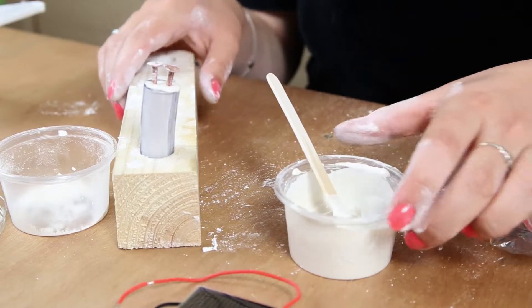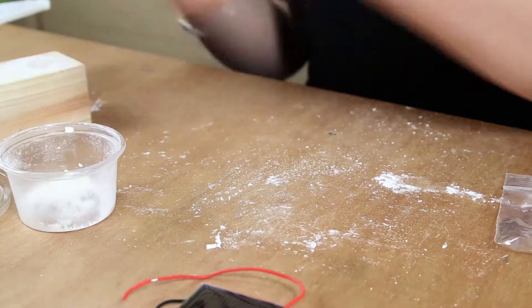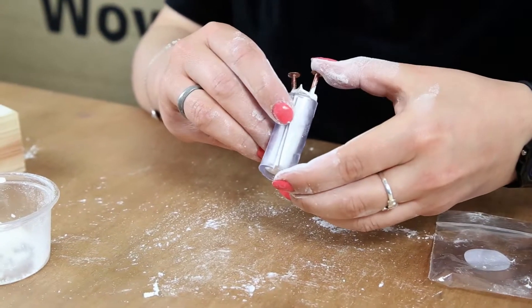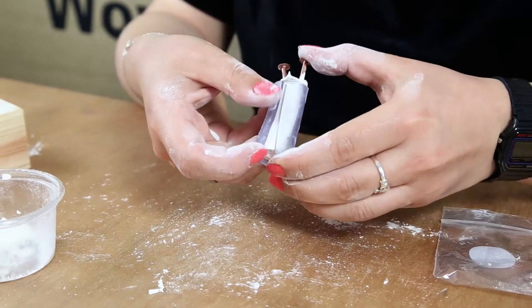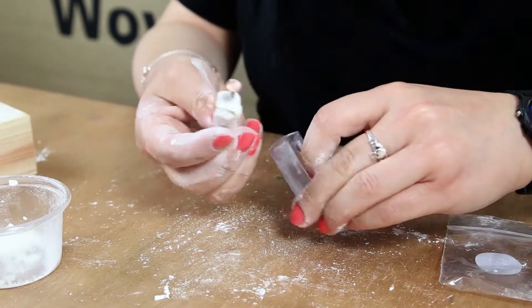When your sensor is fully dried it should look like this one. So it's still inside its case and when you want to take it out of the case you just peel back the plastic and it should come out like that.